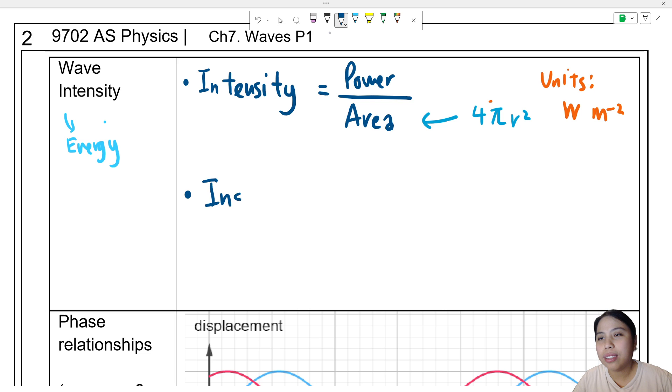So this one, we can also write a further derived equation, where intensity is proportional to the amplitude squared. Otherwise, simplified often as intensity proportional to A². For me, I like to use big A, so I'll use this A².